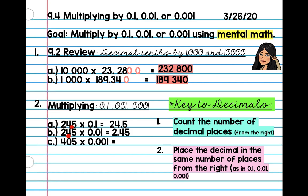Alright, go ahead and try letter C by yourself. Okay, so let's count. We have three places. One, two, three. Alright, same thing. One, two, three. Alright, there you go. 0.405.